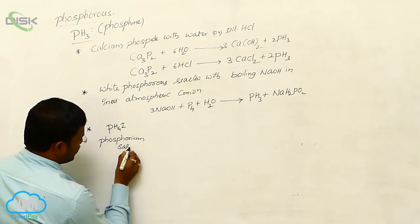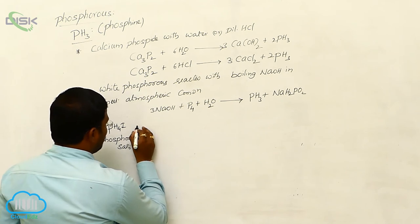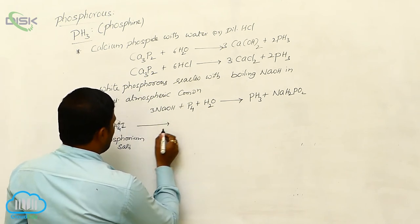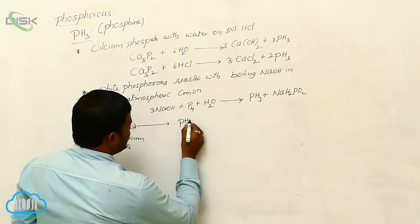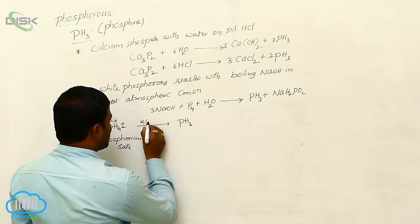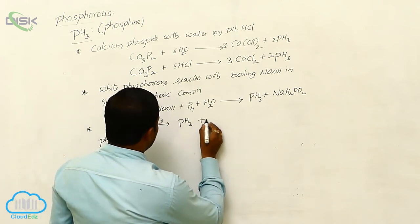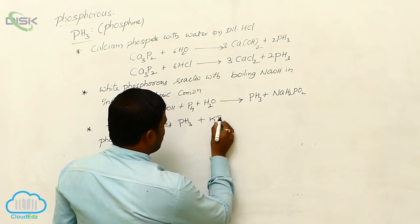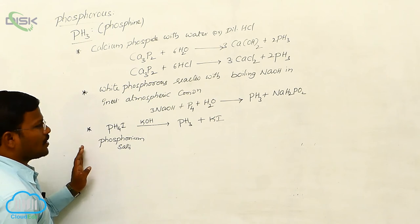Once again, phosphonium iodide when heated or when reacted with potassium hydroxide produces phosphine and potassium iodide as our salt. So, this is the preparation of phosphine.